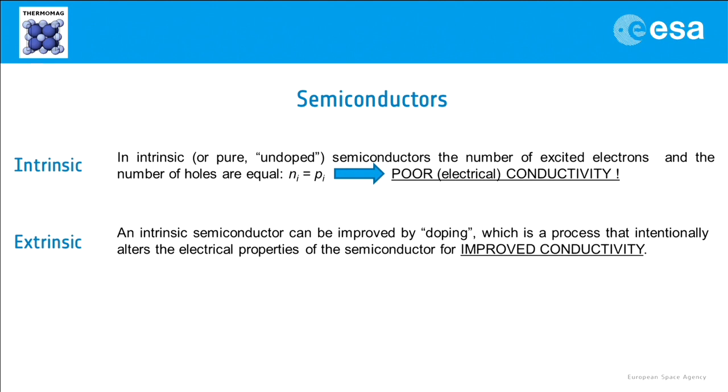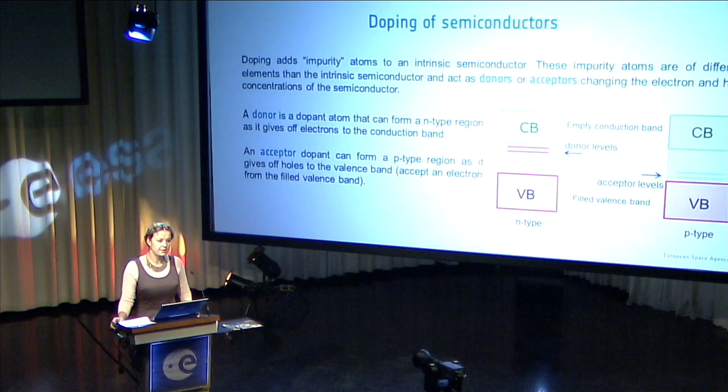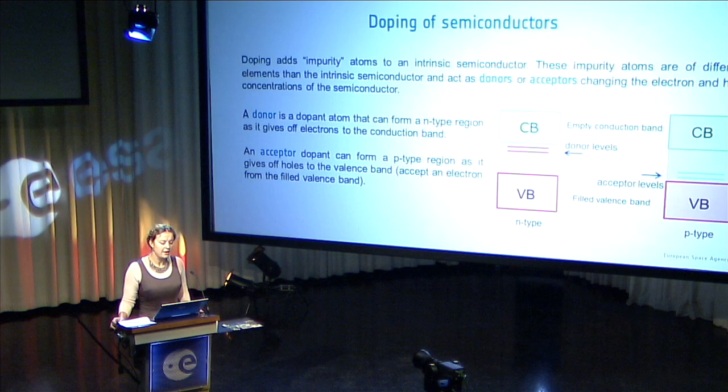Doping can be done by acceptor dopants or so-called donor dopants. When we add the donor dopant, it gives electrons to the conduction band, thus creating n-type region. And acceptor dopant can form a p-type region as it gives off holes to the valence band. In other words, it accepts an electron from the filled valence band.